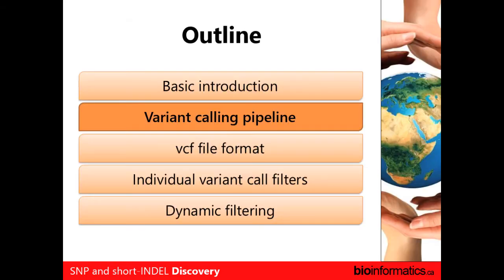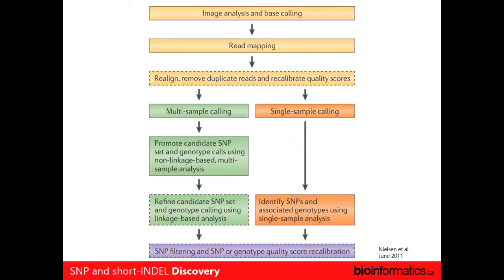What goes into a variant calling pipeline? This is taken from the Nielsen paper in 2011. The processes we've already talked about: image analysis and base calling, then we map those reads to the genome — that's what we did in the previous module. Then there's the extra step we've also done: realignment and duplicate removal. One additional step that a lot of people do is recalibrate those base quality scores. This falls into two different types of pipelines: single sample or a population of samples.